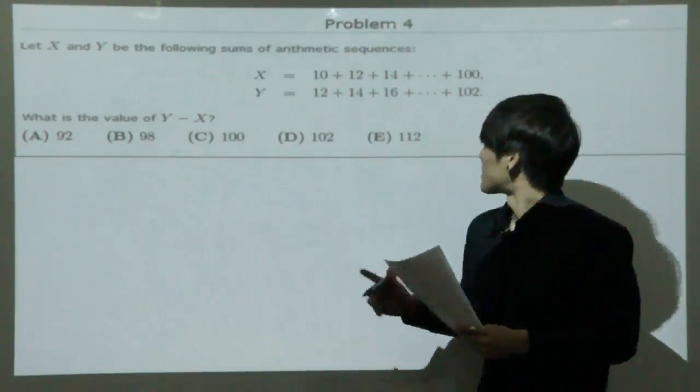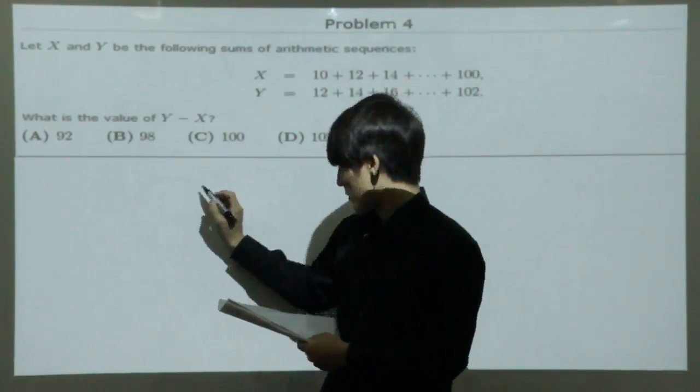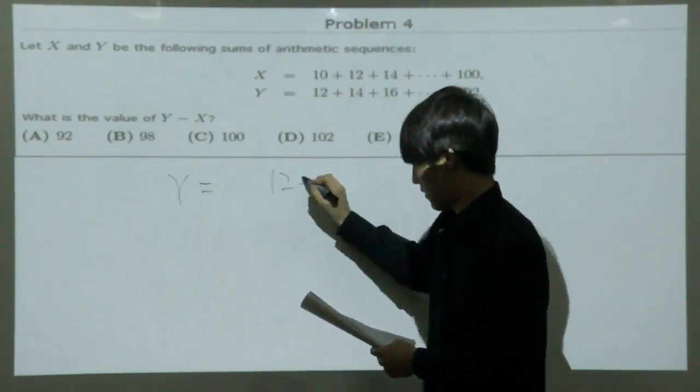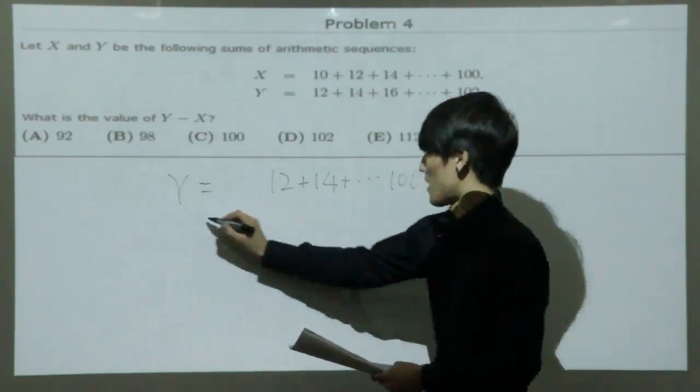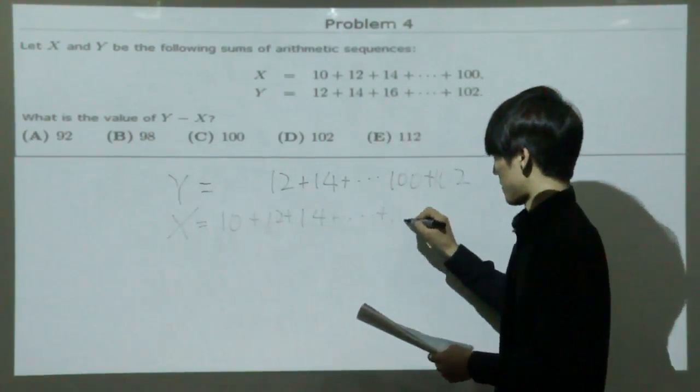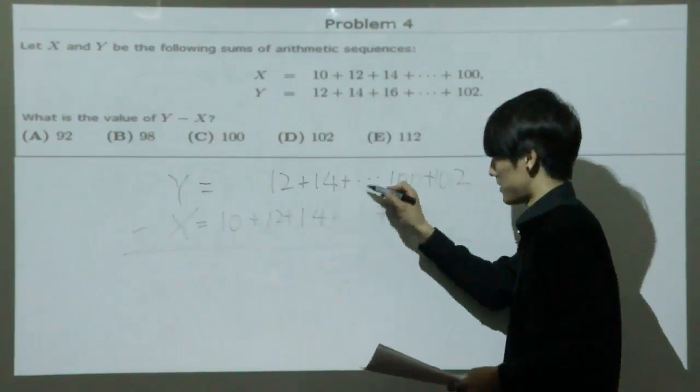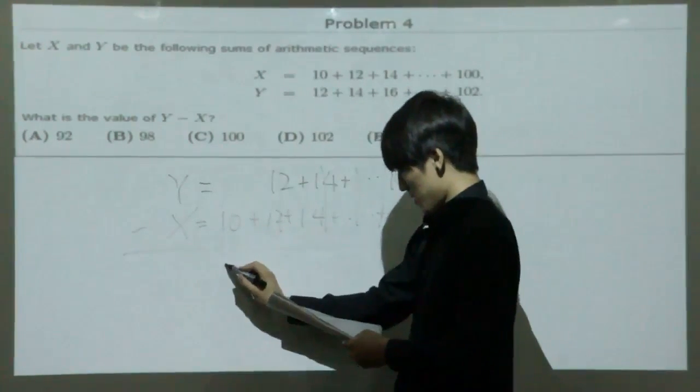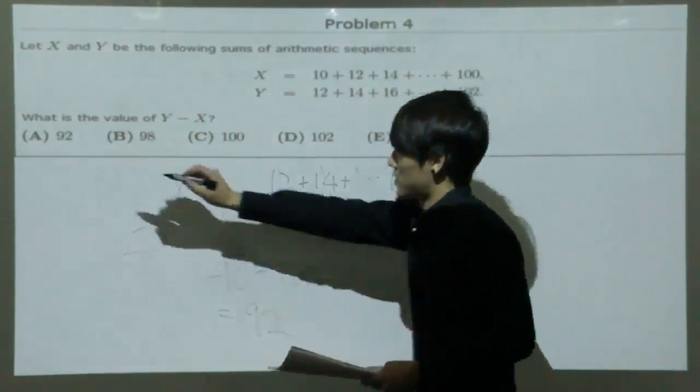You guys might have the urge to actually add all of them up and then subtract it, but you don't have to. All you have to do is set it up the right way. Y equals 12 plus 14 plus up to 102. X equals 10 plus 12 plus 14 plus up to 100. You're looking for Y minus X. If you subtract this, you can see that all of these are the same, so they all cancel out. So all you have left is minus 10 plus 102, which is 92. That's choice A.